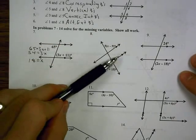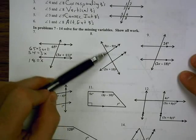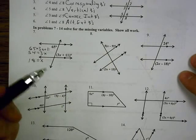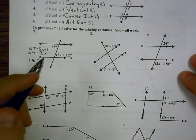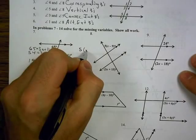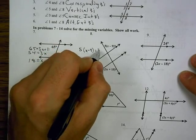In number 8, I have my two parallel lines here, my transversal goes through them. I'm looking at angles on opposite sides of the transversal, outside the parallel lines. So those are alternate exterior, and alternate exterior are equal, so I set the two values equal.